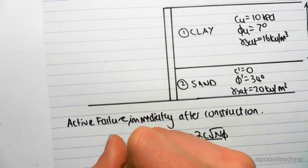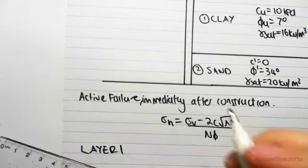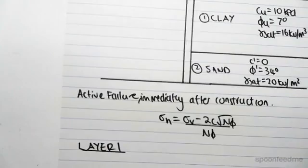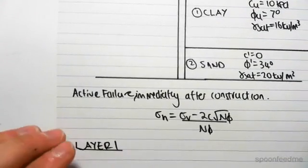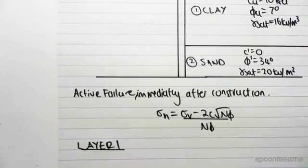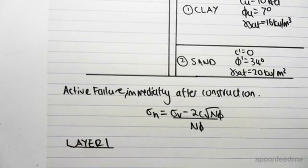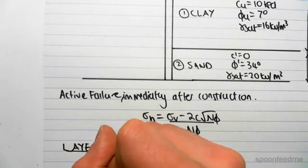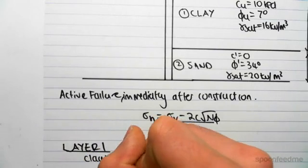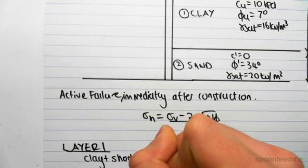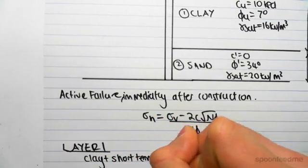Layer 1. So we have 4 meters of clay. What we need to do first of all is look at what type of analysis we're going to be doing. So we do that by looking at the question. We have a clay layer, and we're looking at the immediate short term.